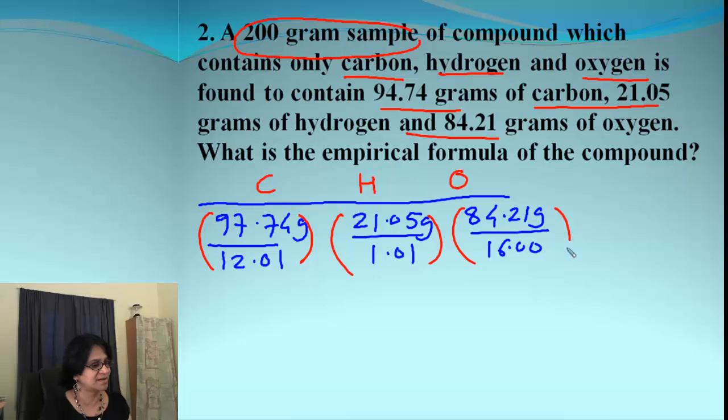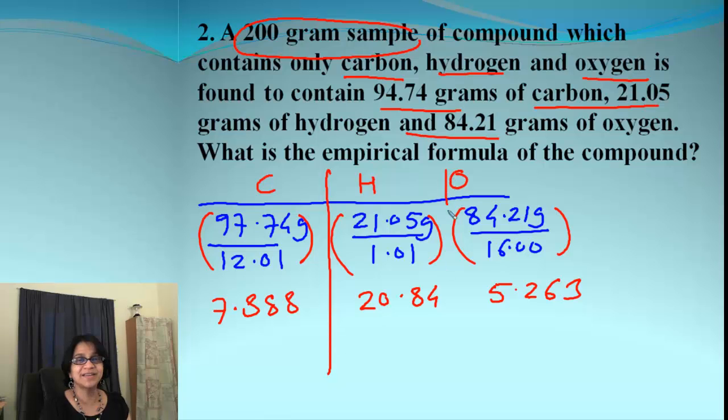And we end up having the simplified answer as 7.888, 20.84 and 5.263. Alright. The next step is divide by the smallest and smallest is 5.263. So let's divide everything by that number.